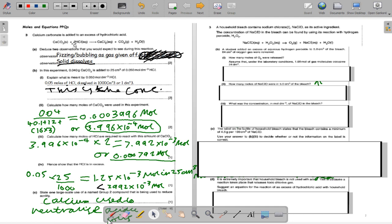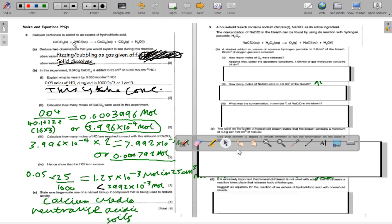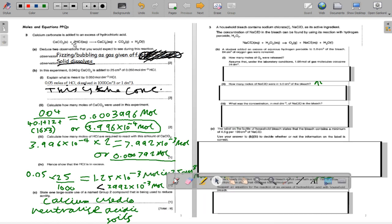For the large scale use, I've put calcium used to neutralize acidic soils and the compound would be calcium hydroxide or Ca(OH)2.